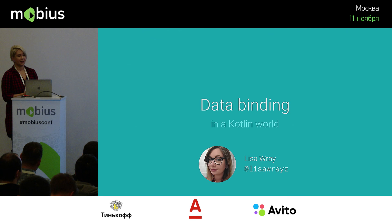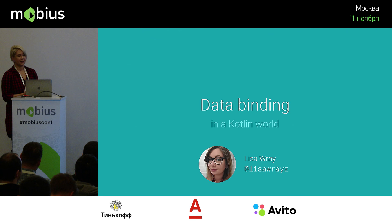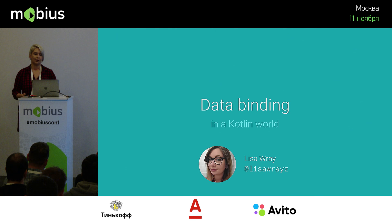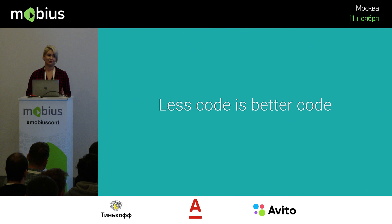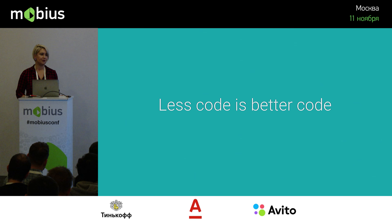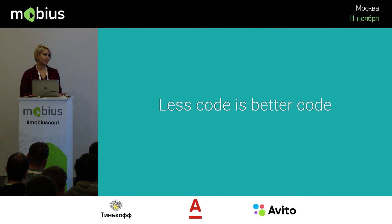Today we're going to talk about the data binding framework on Android. This talk is for people who are currently Android developers. You don't have to know anything about data binding, but you should have a general knowledge of Android. I'm talking about two different frameworks today — data binding and Kotlin — but they share the same goal: to eliminate boilerplate code in your Android app and to have fewer bugs, including fewer visual errors from mixing data streams and fewer null pointer exceptions.